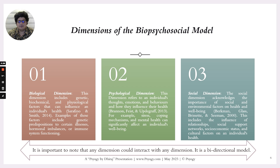The biological dimension includes genetic, biochemical, and physiological factors that can influence an individual's health — for example, predisposition to certain illnesses, hormonal imbalance, and immune system functioning. The psychological dimension refers to an individual's thoughts, emotions, and behaviors and how they influence their health — examples include stress, coping mechanisms, and mental health.